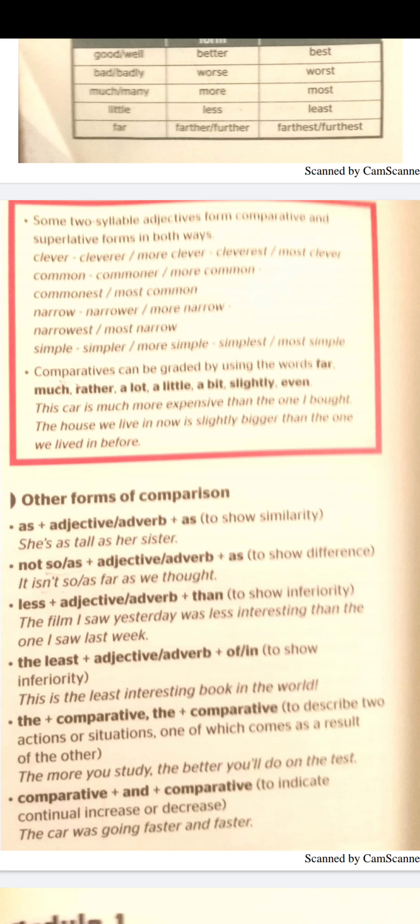Between 'as...as', we use the adjective without any addition — for example: 'She is as tall as her sister.' In a negative sentence, we use 'not so' or 'not as + adjective/adverb + as' to show difference — for example: 'It isn't so far as we thought.' We use 'less' before the adjective or adverb to show inferiority, and 'the least' also to show inferiority.